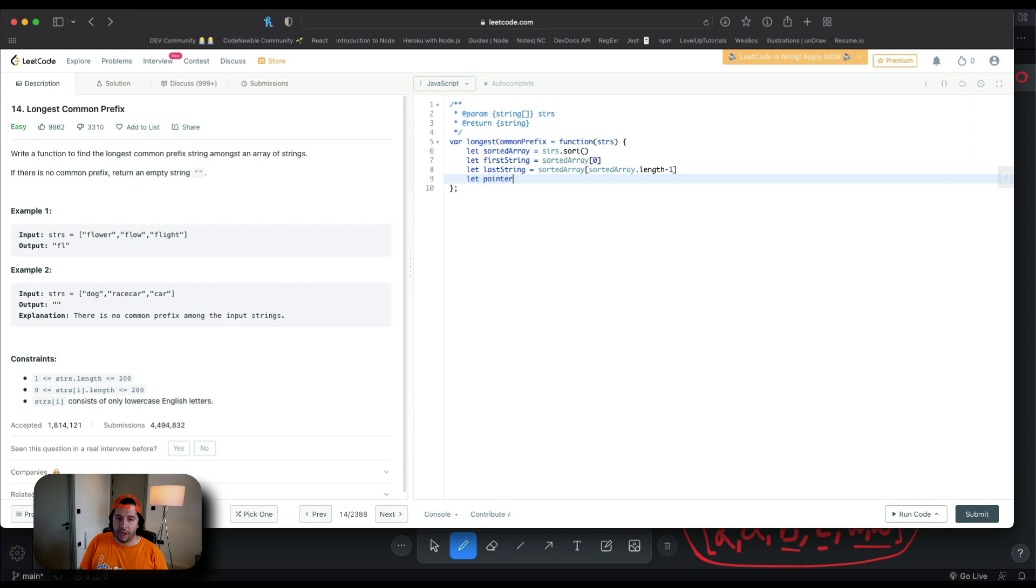And now we are going to use a pointer which is going to point initially at index 0. And that's the result. Let's call it longest common prefix. That's just a string. Sweet! So, let's move to the while loop. We are going to execute the while loop until the pointer is not out of bounds of the first string. Sweet! And now we need a basic condition where we will break out of the loop.